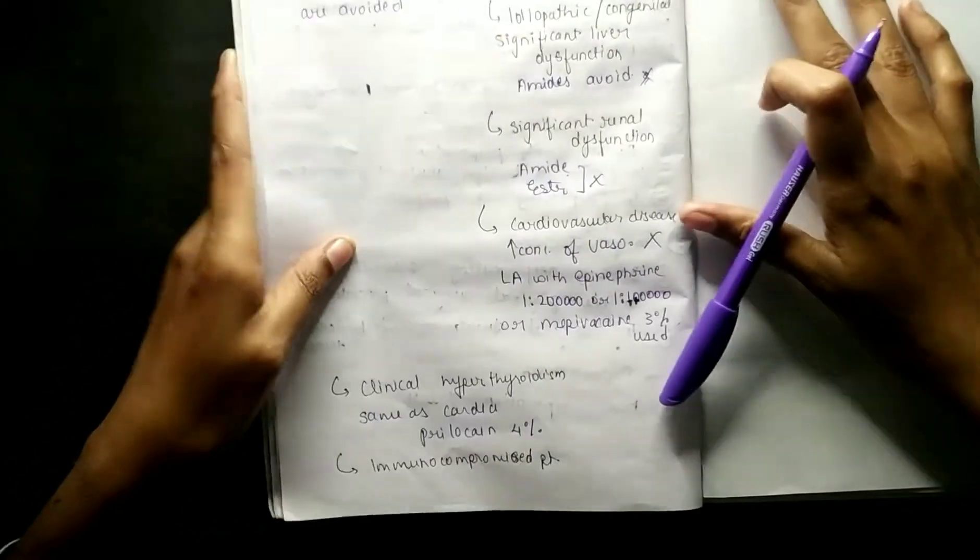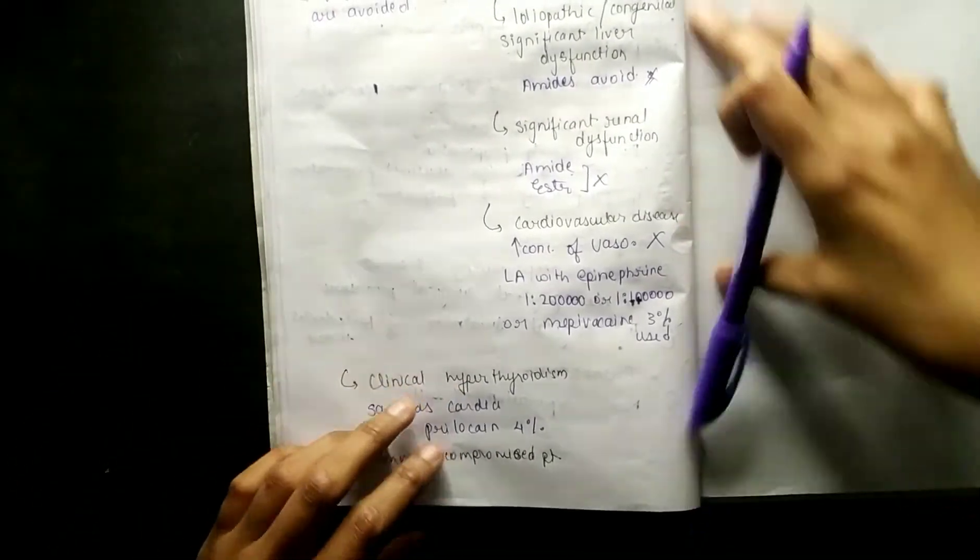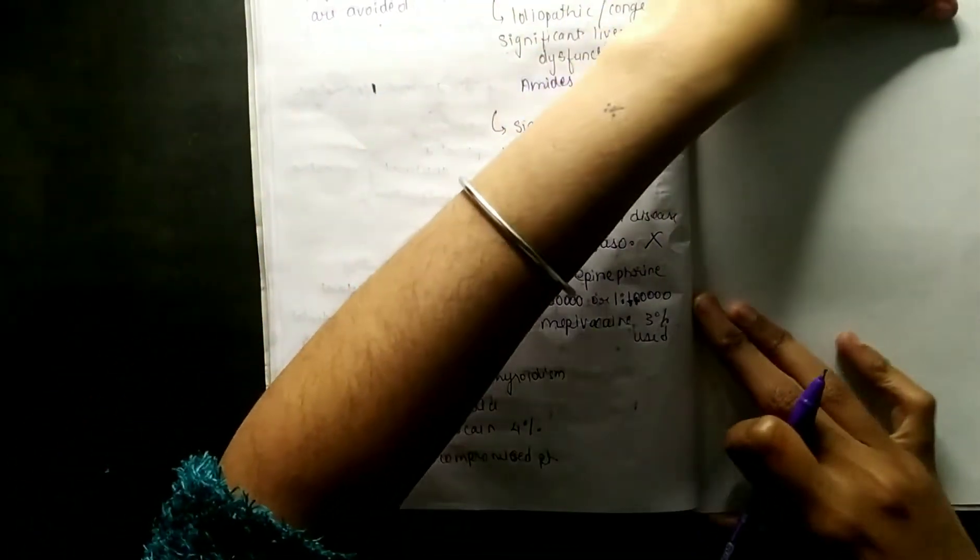Okay, coming to the very important, that is contraindications. We can tell you where we can use local anesthesia, but also contraindications. So there are two types: absolute and relative contraindications.